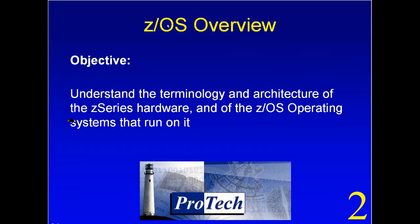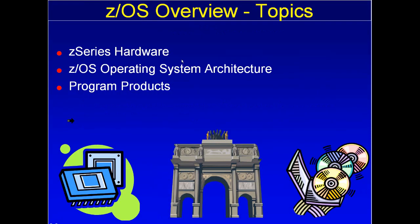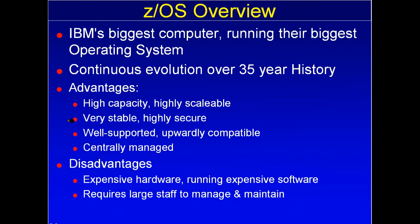In this unit, we're going to talk first about hardware, and we're going to talk about the operating system that runs on that hardware, and then we're going to talk about the program products — things that you buy in addition to your operating system.